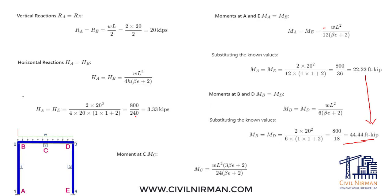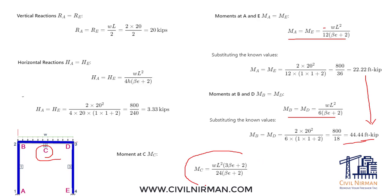A and E and B and D locations are now calculated. For the moment at location C, this is your homework — calculate it manually and tell me in the comment box what the moment at C will be.